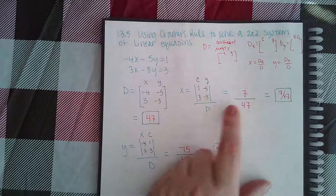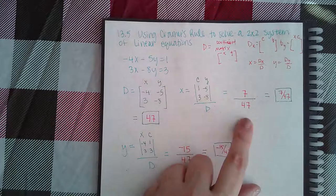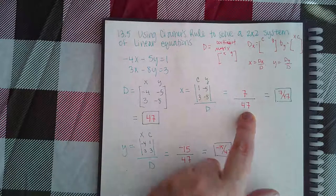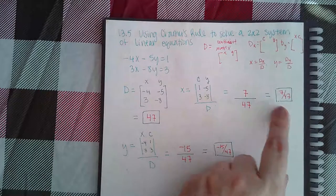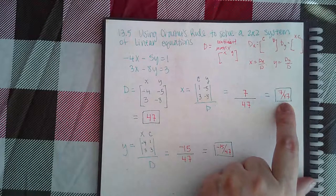We already know from the previous set that d equals 47. And if this could simplify, I would simplify it, but it doesn't. So that is going to be the x value in the end.